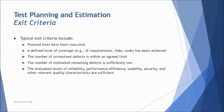Similarly, exit criteria determines when to stop a particular stage or process — it proves that what you wanted to do has been done and achieved. Examples include: planned tests have been executed, a defined level of coverage has been achieved, number of unresolved defects is within an agreed limit, the number of estimated remaining defects is sufficiently low to not cause critical harm, and evaluated levels of non-functional parameters are sufficient. You can have your own custom-built exit criteria depending on the product you are testing.